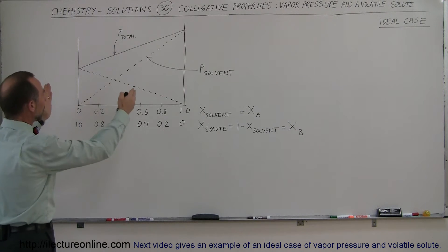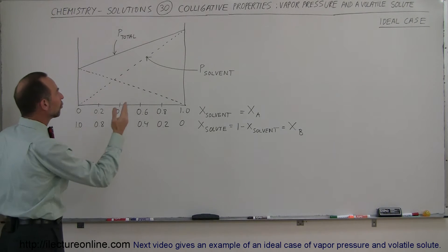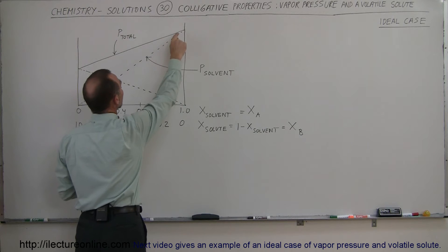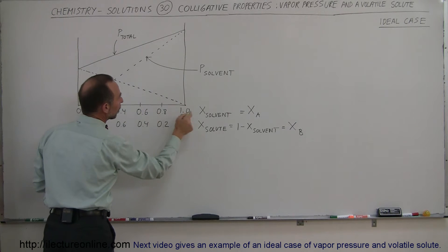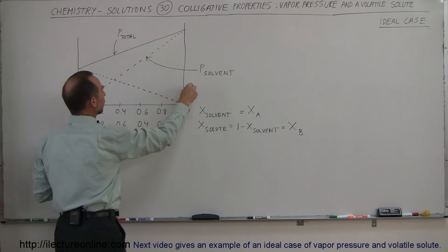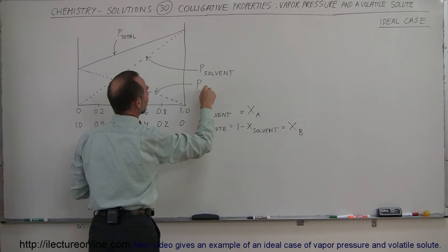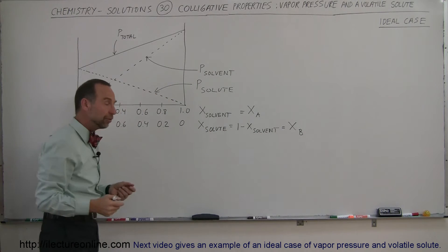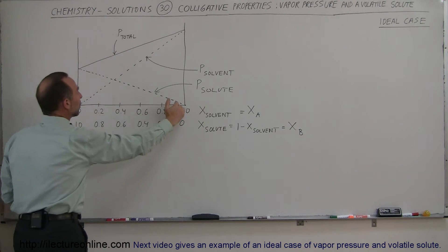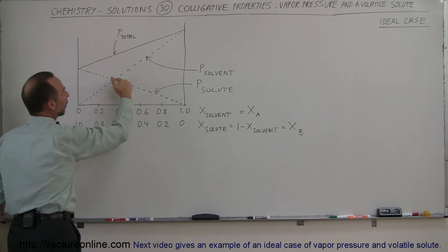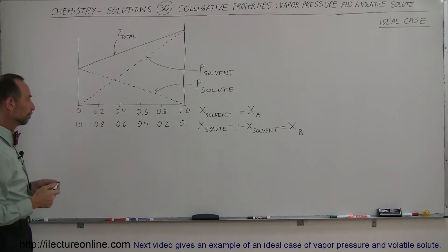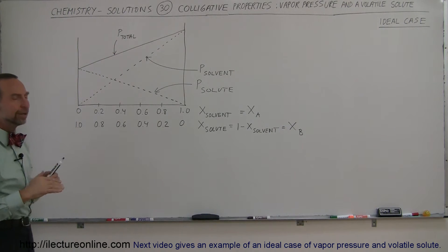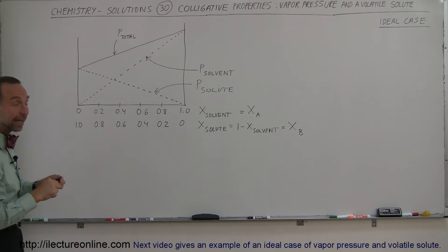What we have here is a chart showing the combined vapor pressure of both the solvent and the solute. Here is a straight line representing the pressure of the solvent as a function of the molar fraction of the solvent. And then this curve here would be the pressure caused by the solute. Since the amount of solute present equals one minus the amount of solvent present, we can express the vapor pressure of the solute in the solution. The sum of the two becomes the total pressure. This is an ideal case — there are cases where the curve will differ slightly, which we'll look at in future videos.